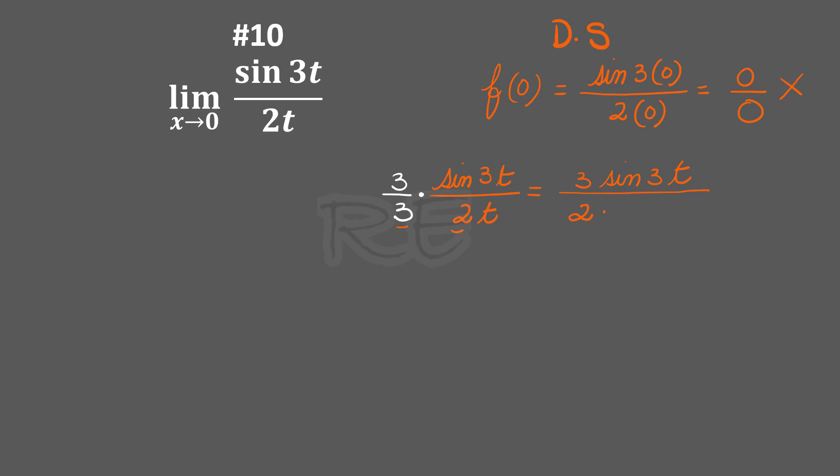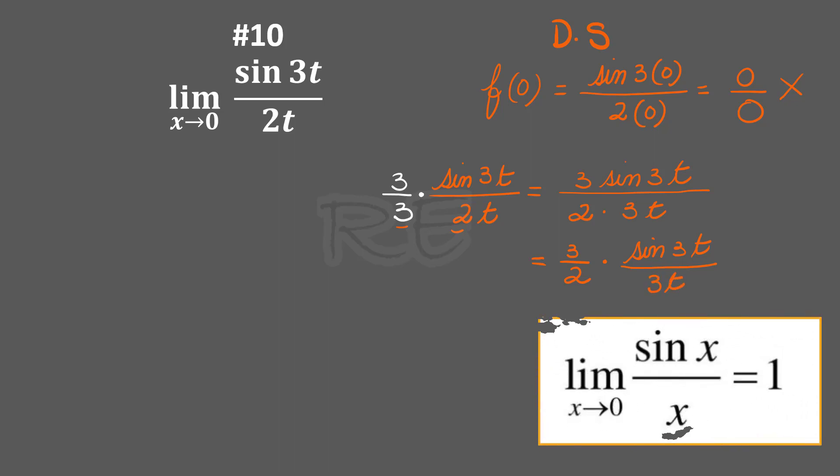This will not change the answer, so the denominator will be written as 2×3t. Let's separate this into 3/2 and sin(3t) over 3t.